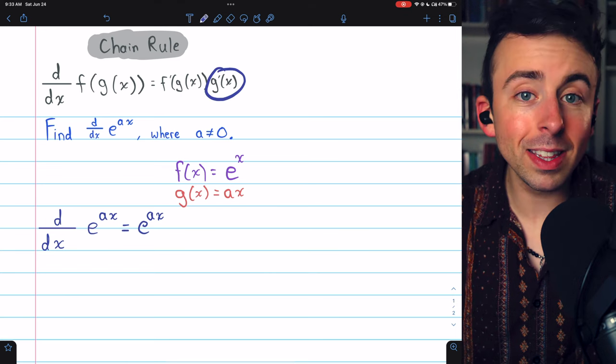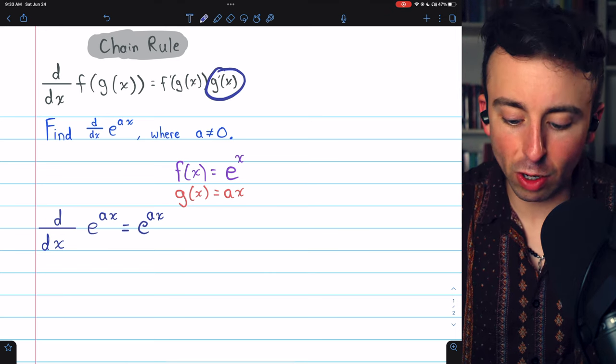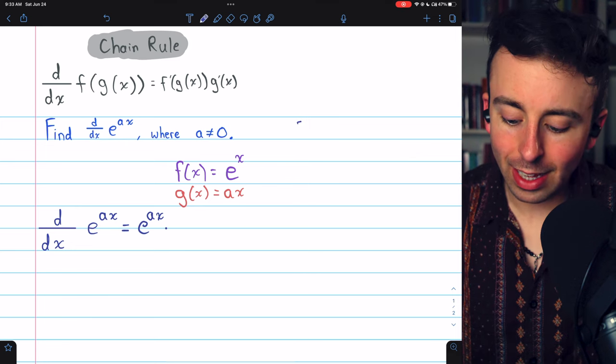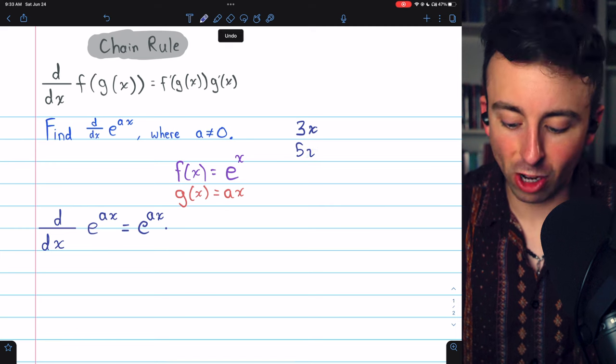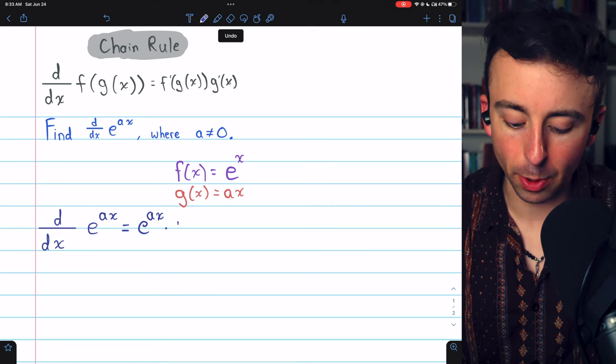Then we just multiply by the derivative of the inside function. That's g prime. The derivative of a times x, that's like the derivative of 3x, or the derivative of 5x. It's just a. It's just that real number coefficient.